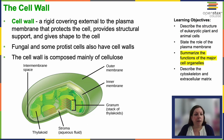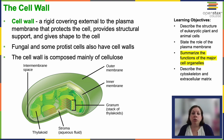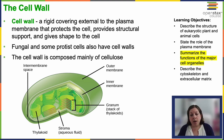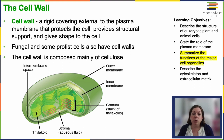Let's look at a few plant cell-specific structures. The cell wall is a rigid covering external to the plasma membrane. It protects the cell, provides structural support, and gives the cell its shape. Some fungal cells and protists also have cell walls. Some fungal cell walls differ from plant cell walls, but some protist cell walls are very similar to plant cell walls.